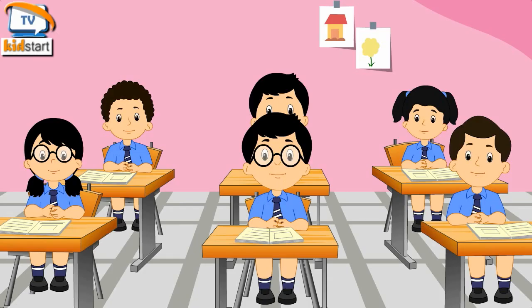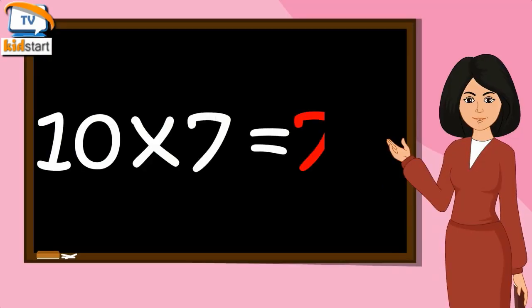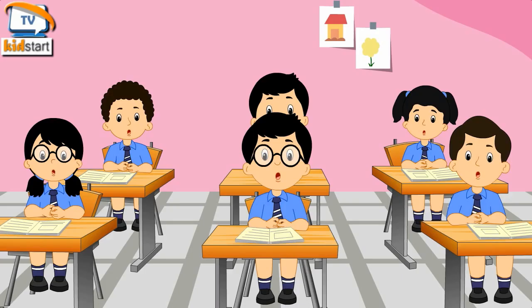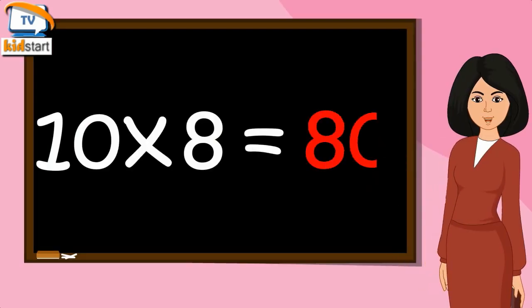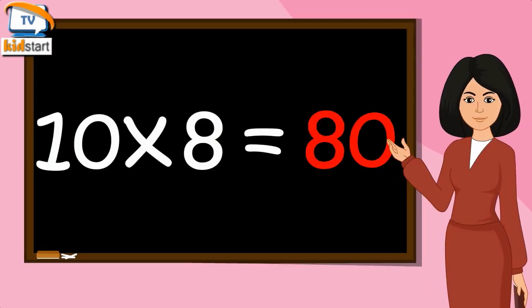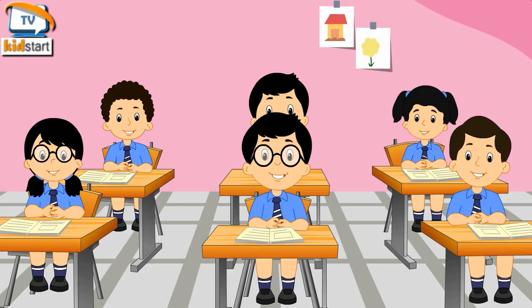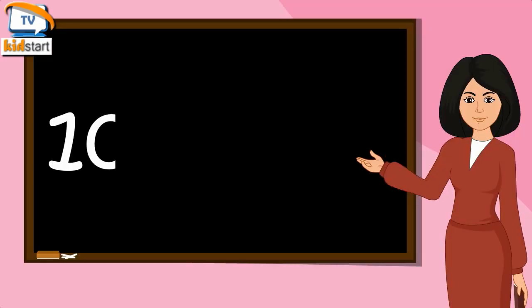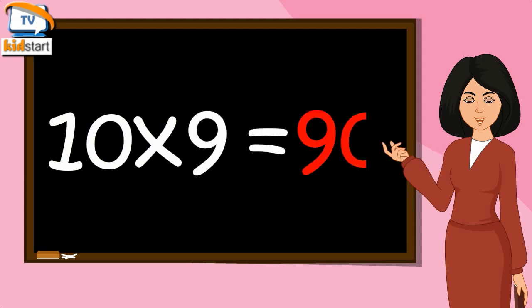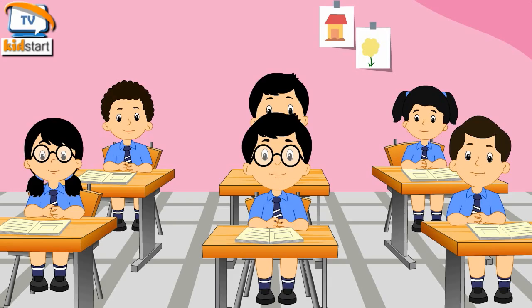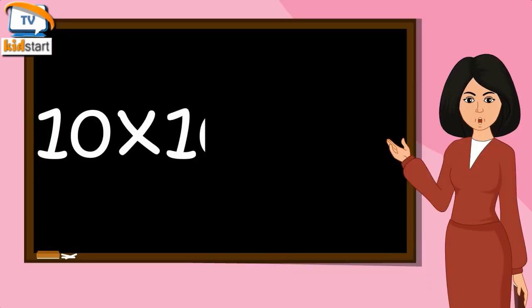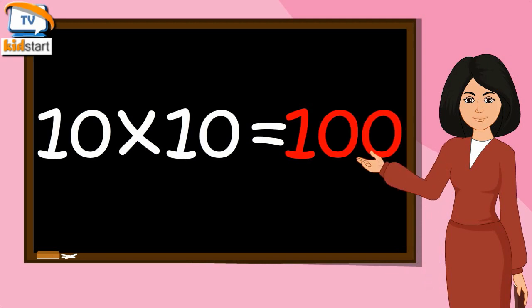Ten Six's a Sixty. Ten Seven's a Seventy. Ten Eight's a Eighty. Ten Nine's a Ninety. Ten Ten's a Hundred.